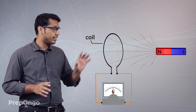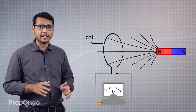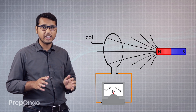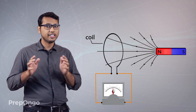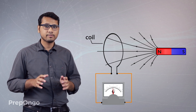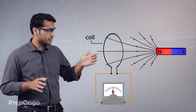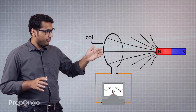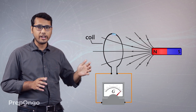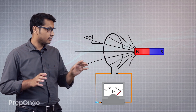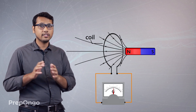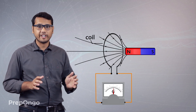We have taken a magnet, and by the movement of this magnet we will see whether current is being induced in the coil or not. So if I move the magnet towards the coil, you will find that the galvanometer deflects in the left direction.